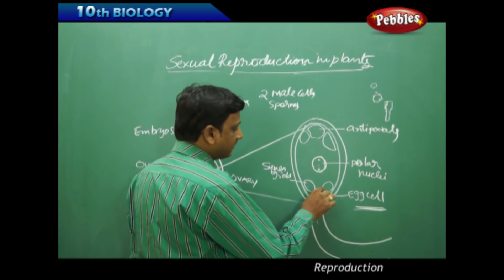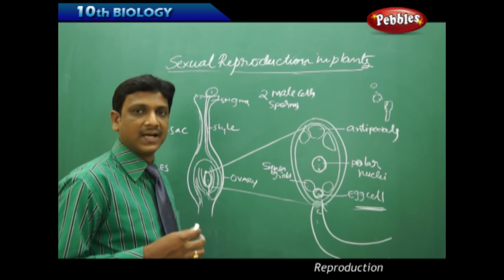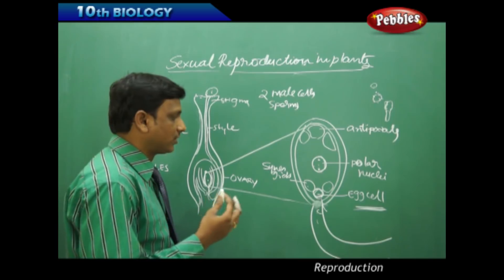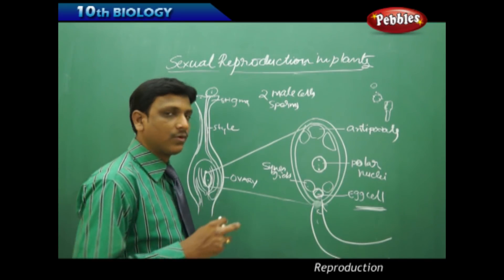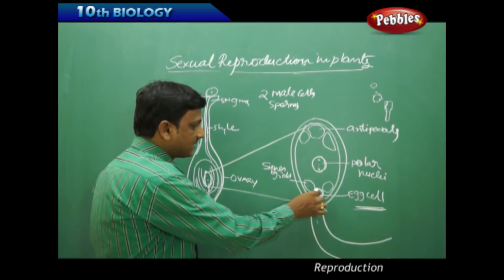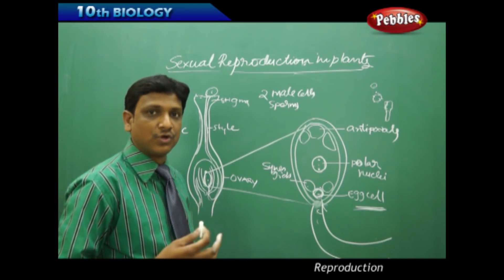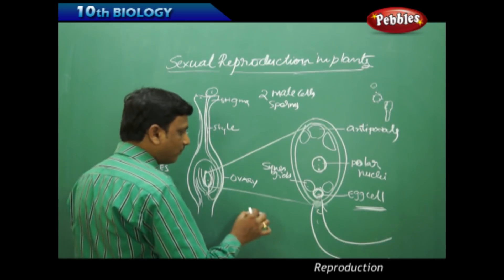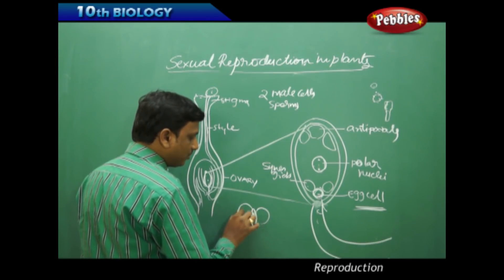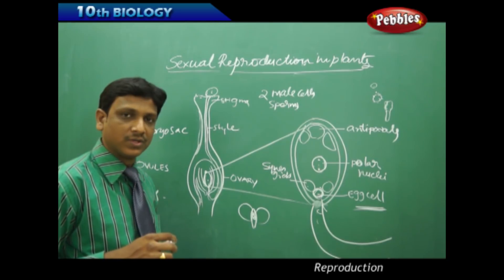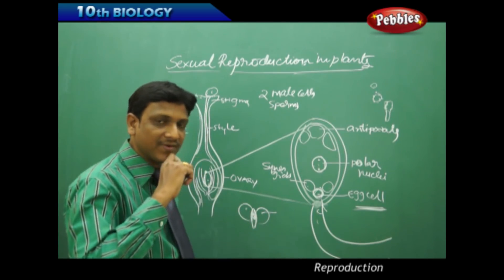The zygote will develop either one or two cotyledons. In the case of a dicotyledonous plant, the embryo gets two cotyledons; in the case of a monocot plant, it gets one cotyledon. These cotyledons absorb the food stored in the endosperm. The zygote has a rod-like structure to which the cotyledons are attached — two cotyledons for a dicot, one for a monocot.